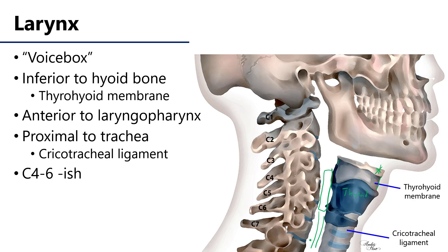The larynx sits proximal to the trachea, which is the conductive pathway to the lungs. The larynx is connected to the trachea via the cricotracheal ligament that runs between the cricoid cartilage of the larynx and the trachea. We estimate that the larynx sits approximately between C4 and C6 levels of the cervical spine.